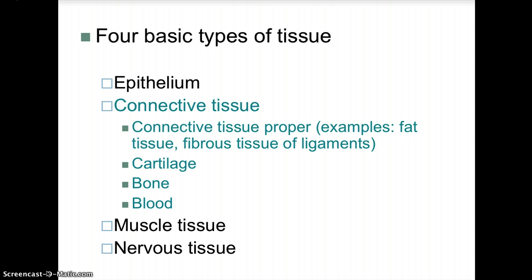Our next basic tissue type is connective tissue, which is a very diverse group. Connective tissue binds structures together, provides support and protection, fills spaces, produces blood cells, and stores fat. Connective tissue cells are widely separated by non-living extracellular matrix composed of an organic ground substance containing fibers, varying in consistency from solid to semi-fluid to completely fluid. The functional and physical properties of connective tissue are largely derived from the characteristics of their matrix.